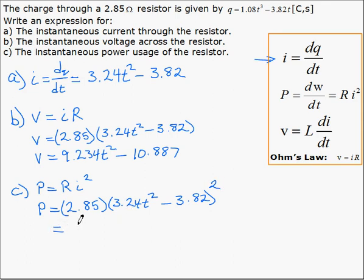Doing a little algebra, squaring this binomial and multiplying by 2.85 gives us 29.82T to the 4th minus 70.55. And that's the power as a function of time.